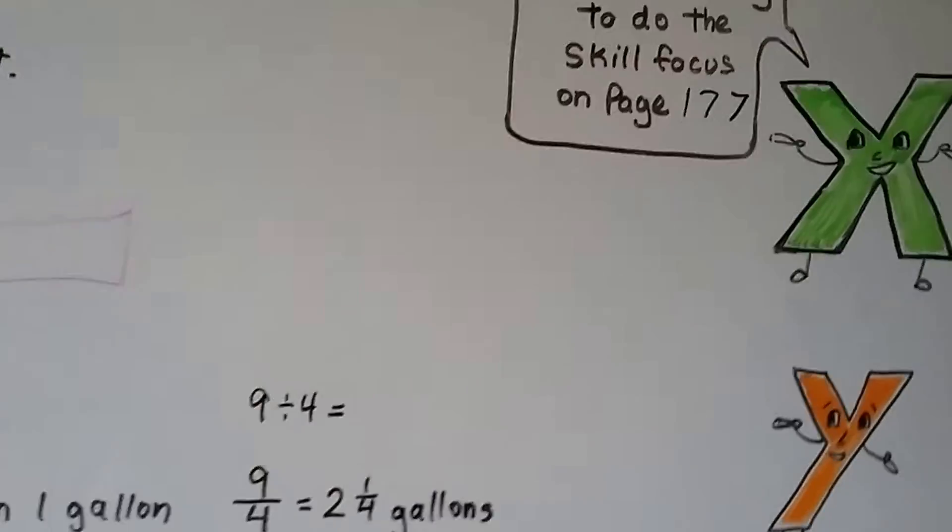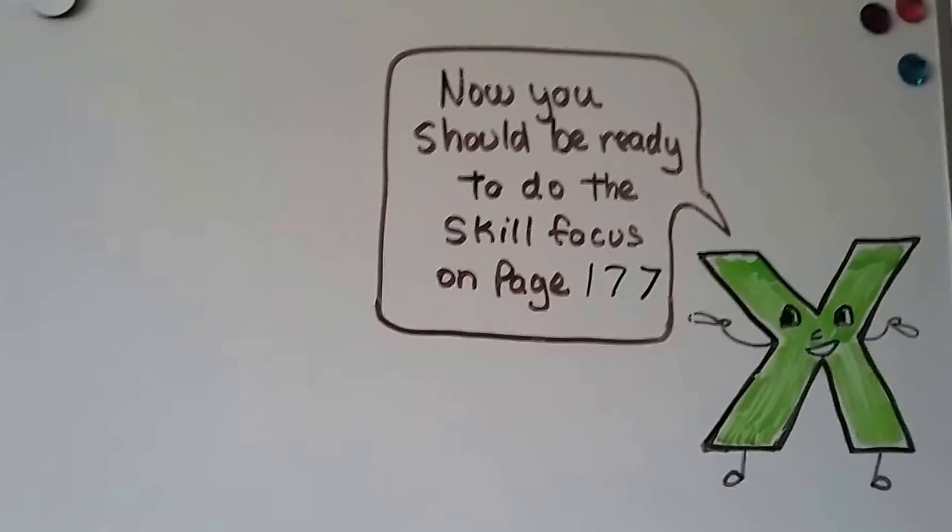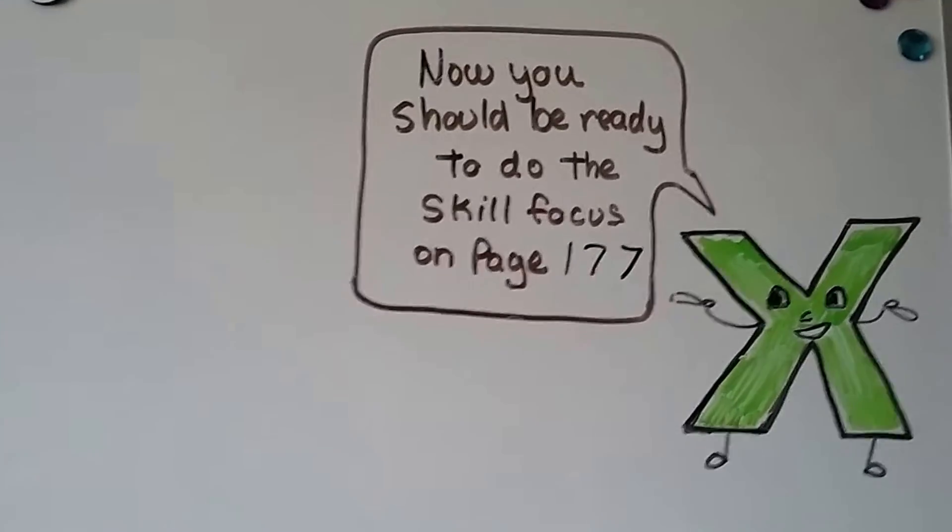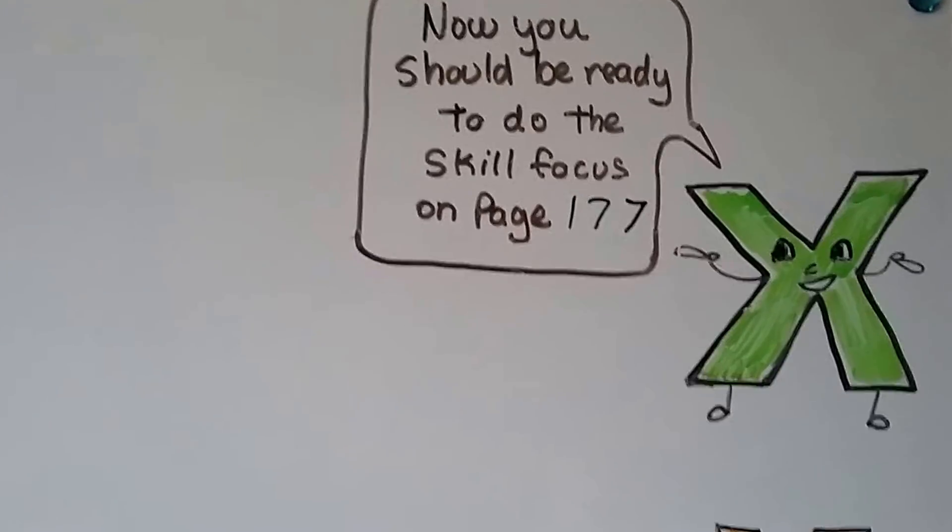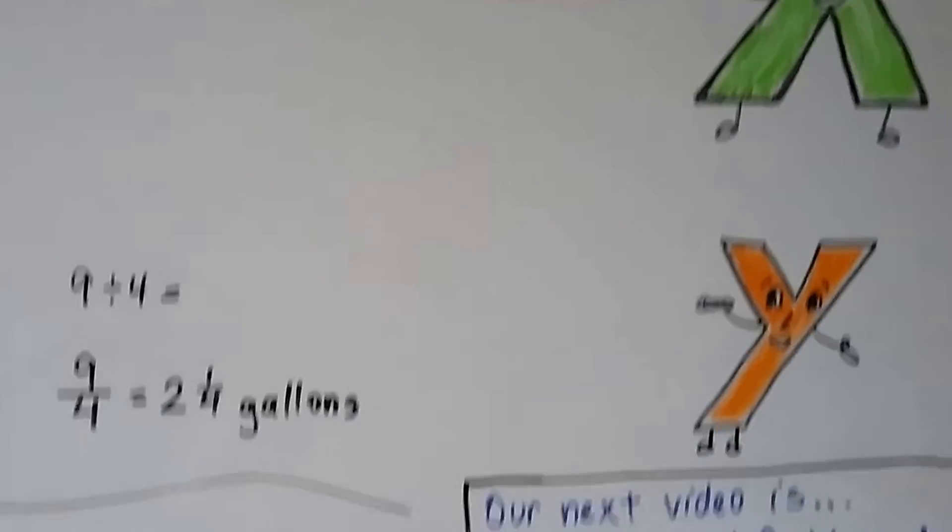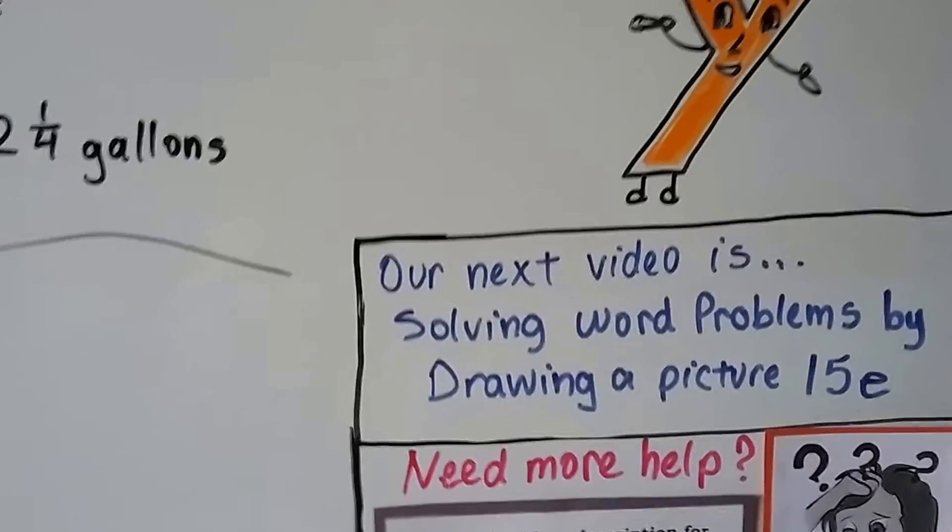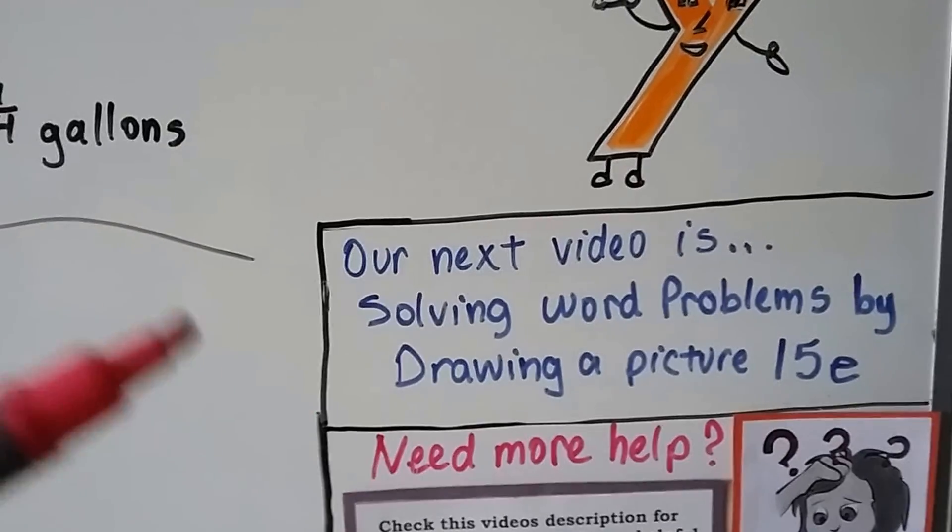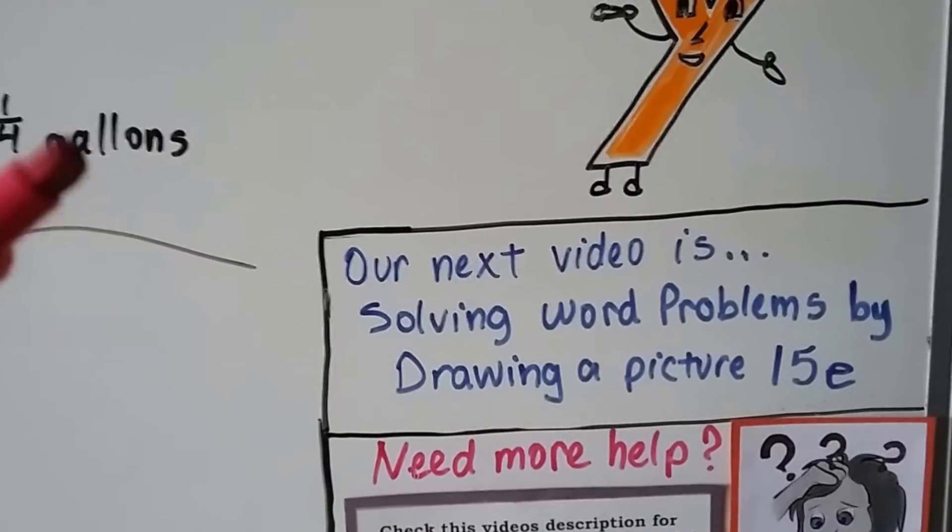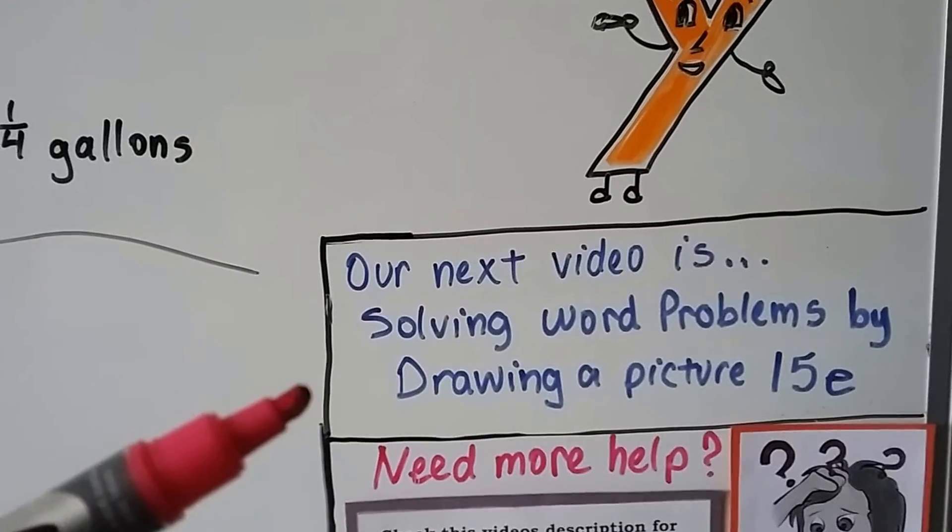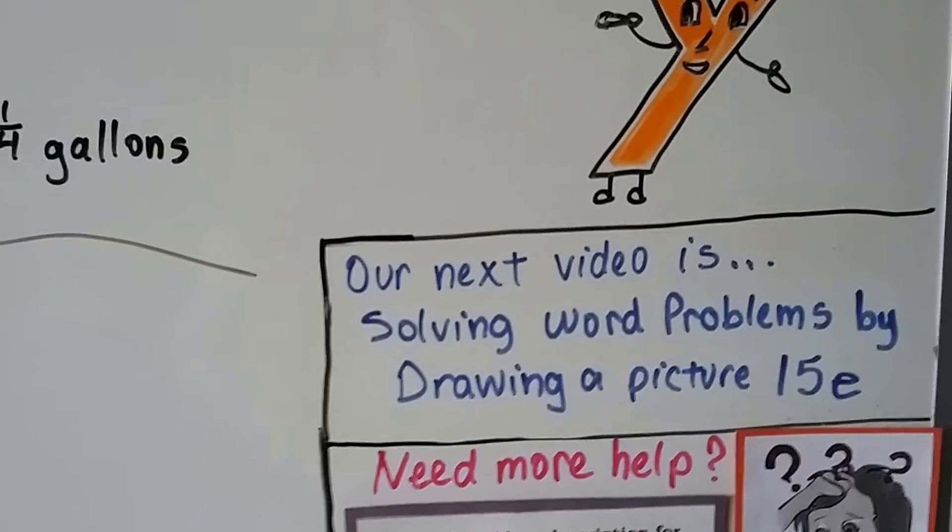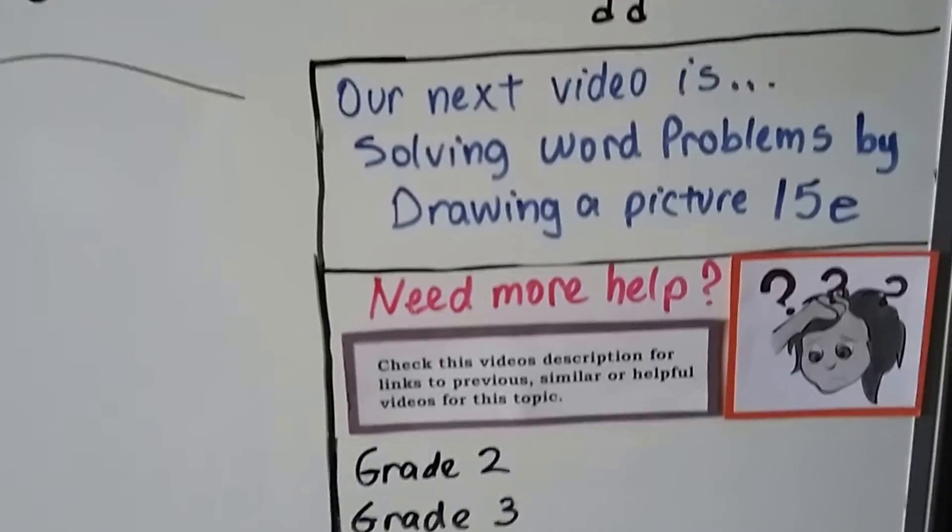So you now should be ready to do the skill focus on page 177. Just make sure you really read the problem and answer exactly what it was asking. Don't let it trick you. Our next video is going to be solving word problems by drawing a picture. And amazingly, drawing some silly little picture might turn a light bulb on over your head and make you understand the problem and you'll be able to answer it quicker. That's lesson 15E.